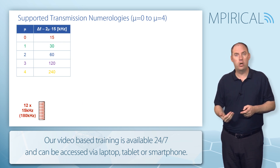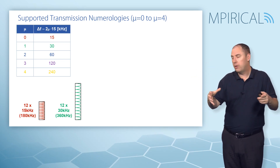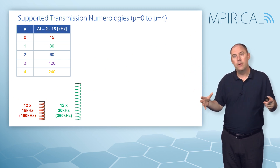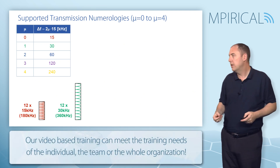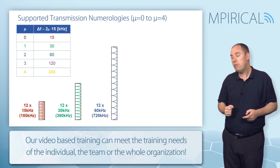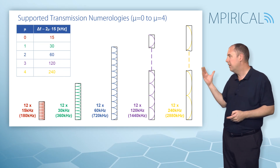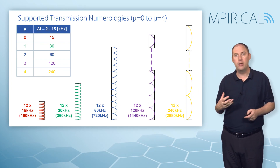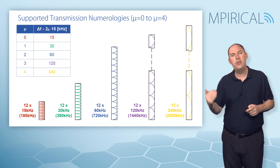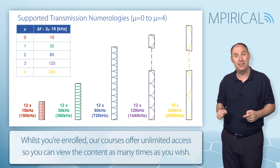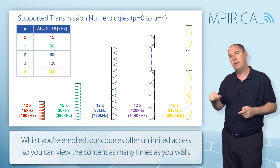As we change the numerology, the sub-carrier spacing doubles, and therefore the size of this physical resource block — still 12 sub-carriers — is going to double. So the numerology has a big effect on the size of these resource blocks; it doubles each time. It's always 12 sub-carriers, but the actual size in kilohertz varies drastically depending on the numerology. It's worth noting that you don't just randomly pick which numerology you want — the numerology is very closely linked to the frequency band you deploy on. Lower frequency bands use lower numerology; millimeter wave uses higher numerology.